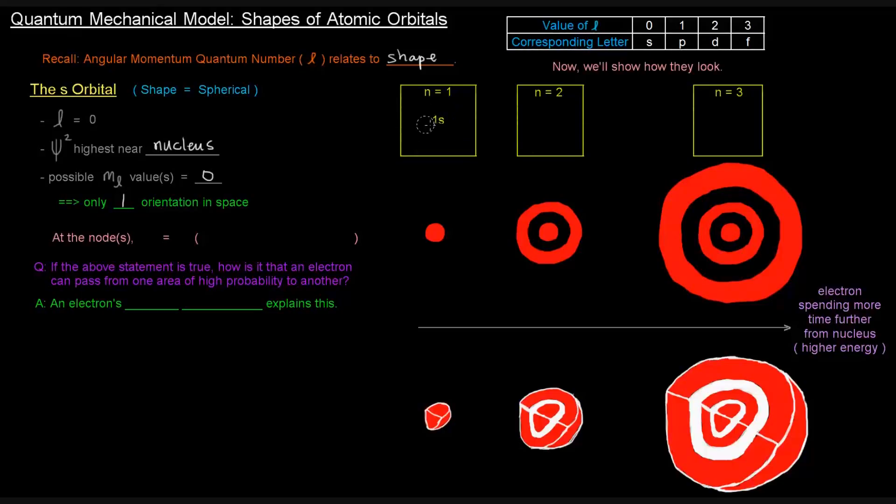This is specifically the 1S orbital. This is the 2D representation. Down here is the 3D representation. And this white outline doesn't mean anything specific. The outline itself is just a way for me to sort of depict the shape.